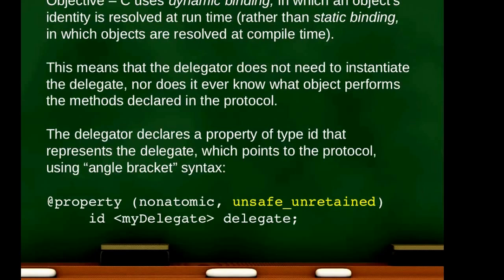So the delegator declares a property of type ID. Why? Because it doesn't know what class the delegate is going to be. The delegator declares an ID property which represents the delegate class, and this points to the protocol using angle bracket syntax. Here's the property declaration for a delegate: it's nonatomic, uses unsafe_unretained, then ID, and then in angle brackets the name of the protocol. Here we call it MyDelegate, and by convention we name this property 'delegate' — we can name it anything, but conventionally we name it delegate.